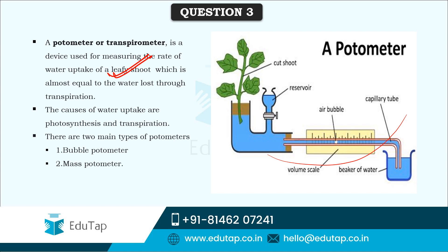The causes of water uptake are: one, photosynthesis — water is required for photosynthesis — and the other is transpiration. This is how the amount of transpiration can be calculated with the help of a potometer. There are two main types of potometers: the bubble potometer and the mass potometer.